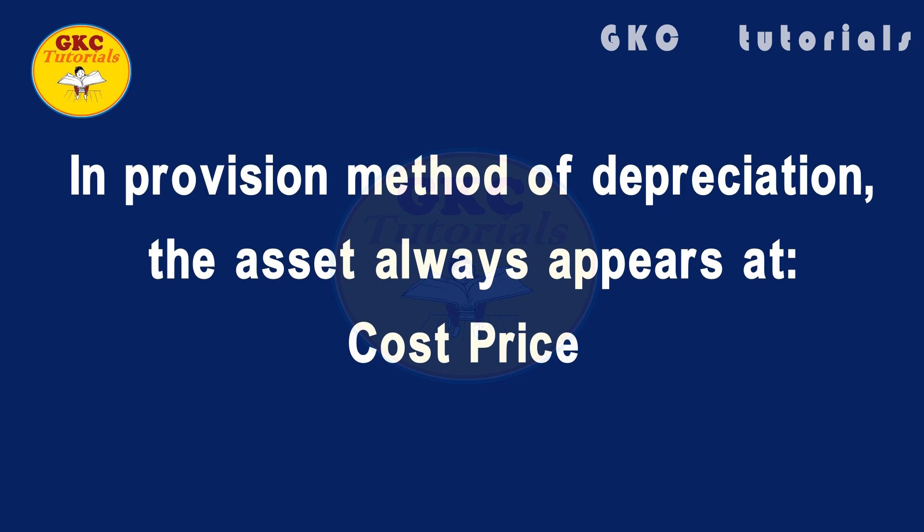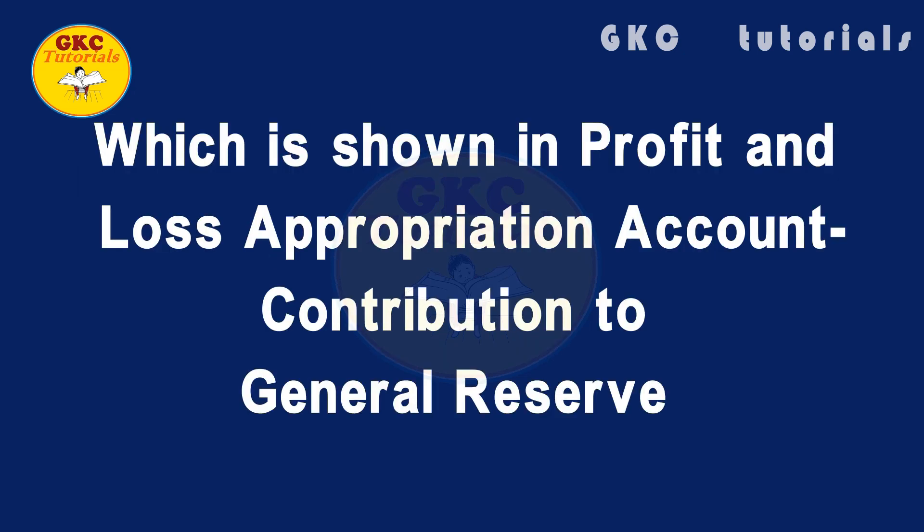Next question: in the provision method of depreciation, the asset always appears at cost price. Next question: what is shown in the profit and loss appropriation account? The answer is contribution to general reserve.